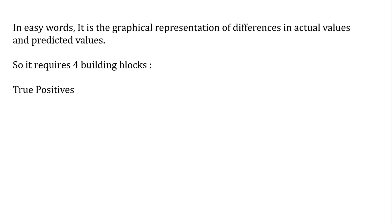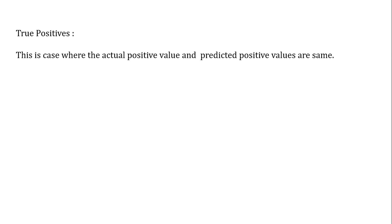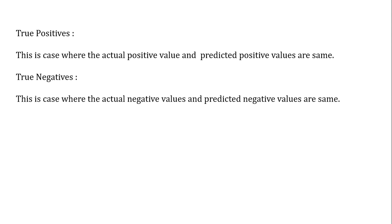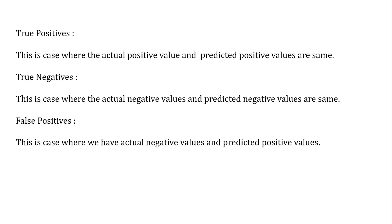Let's start with true positives. This is the case where the actual positive value and the predicted positive value are the same. So if I have one in my actual value and I get a predicted value of also one, it gives me a true positive. Then we have true negatives, in the case where the actual value is also negative, that is zero, and the predicted value is also zero.